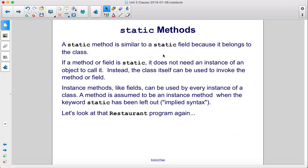A static method is similar to a static field because it belongs to the class. If a method or field is static, it does not need an instance of an object to call it. Instead, the class itself can be used to invoke the method or field. Instance methods, like fields, can be used by every instance of a class. A method is assumed to be an instance method when the keyword static has been left out, which is implied syntax.